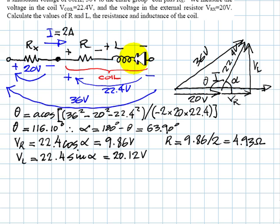For the inductive part of that coil, according to Ohm's law, that voltage, 20.12 is the product of X of that coil that multiplies the current of 2 amps. So we can find what is the reactance of that coil. It's 20.12 divided by 2, 10.06 ohms.